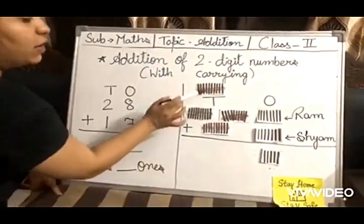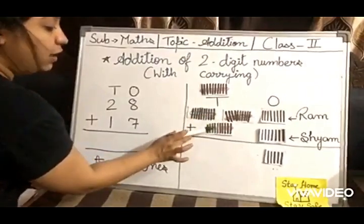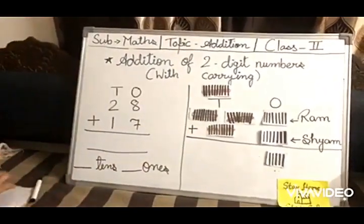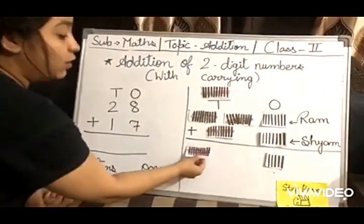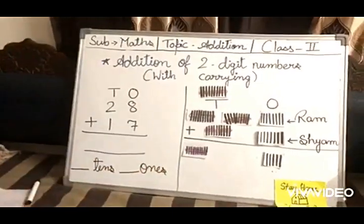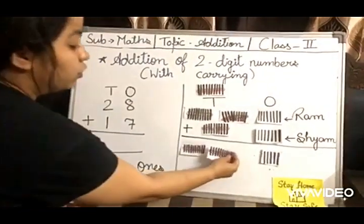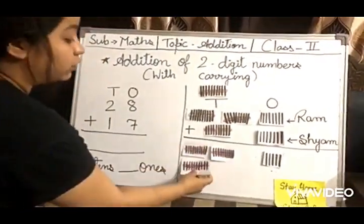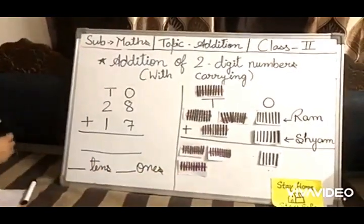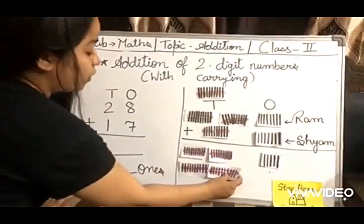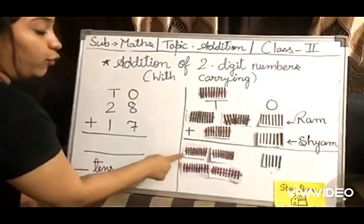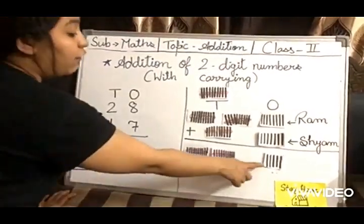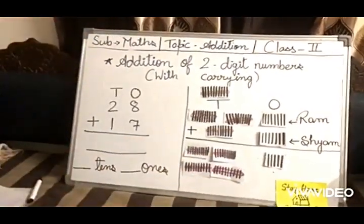Now we have to count the bundles: 1, 2, 3, 4. So four bundles of sticks: 1, 2, 3, and 4. So 4 tens means 45. So the answer will be 45.